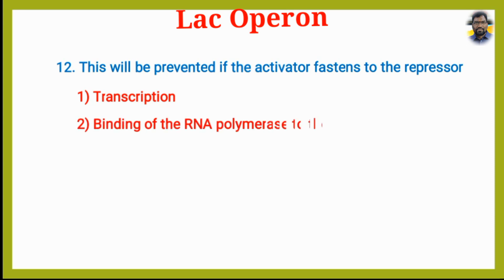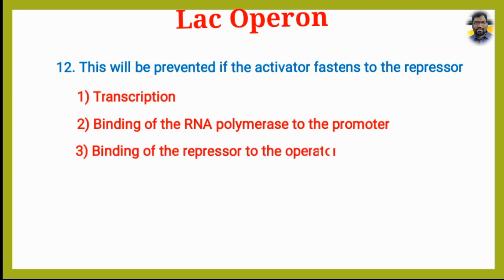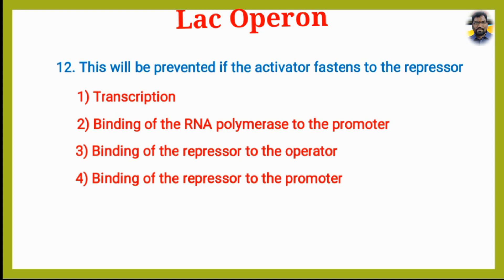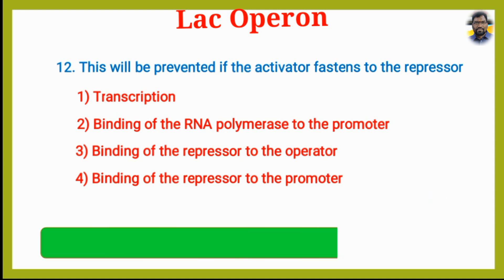What will be prevented if the repressor binds to the operator? Option 1: Transcription. Option 2: Binding of RNA Polymerase to the promoter. Option 3: Binding of the repressor to the operator. Option 4: Binding of the repressor to the promoter.